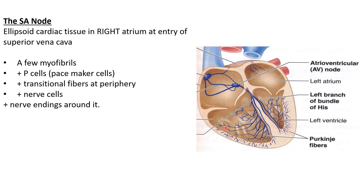The SA node is an ellipsoid cardiac tissue in the right atrium at the entry of the superior vena cava. It is different from the brown contractile cells in that it has very few myofibrils. The SA node contains P cells (pacemaker cells) and transitional fibers at its periphery, as well as nerve cells. The blue pacemaker cells are surrounded by myocardial contractile cells, with transitional fibers in between.